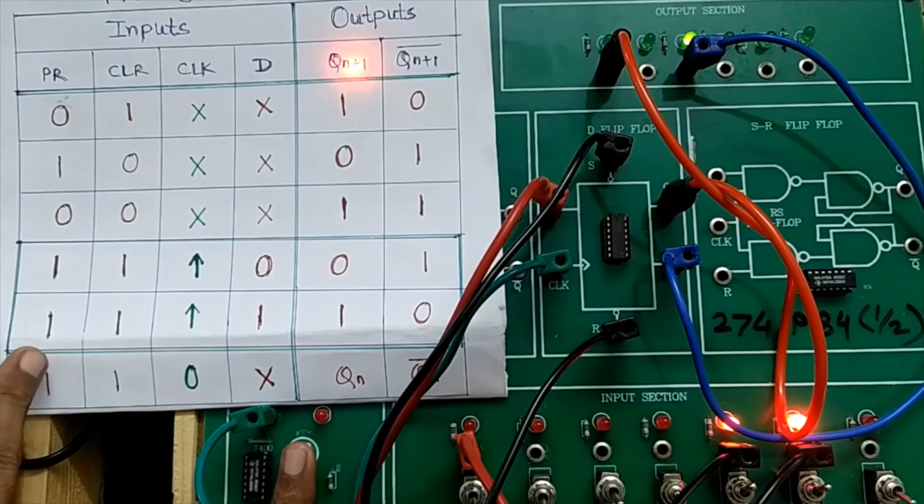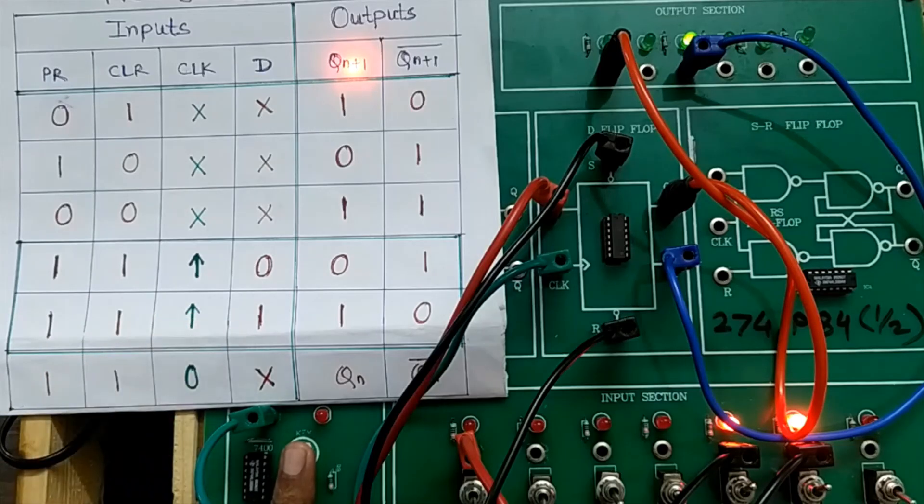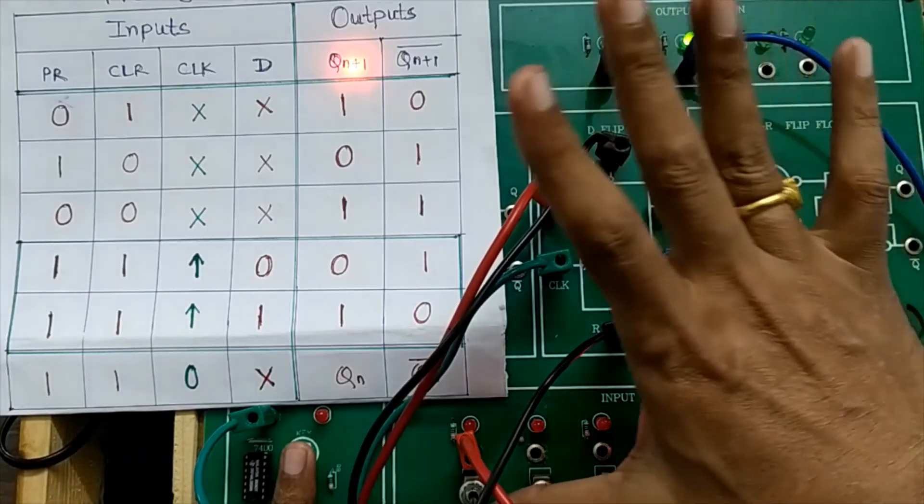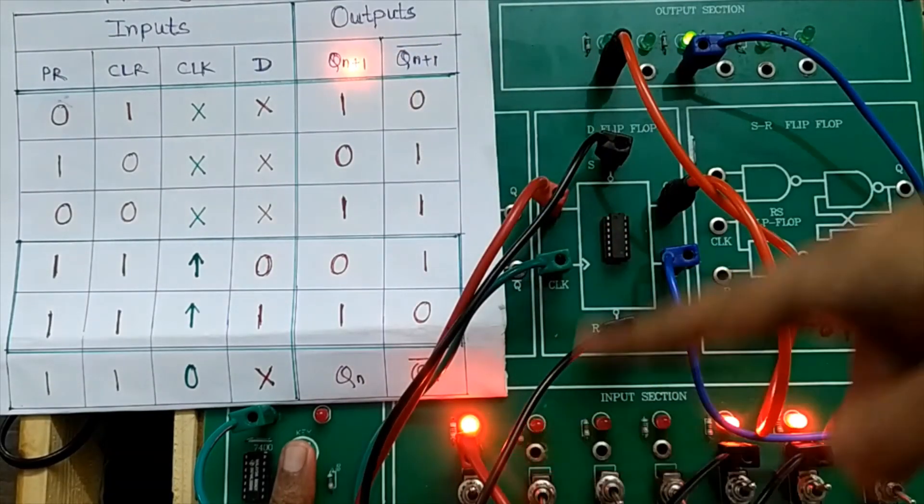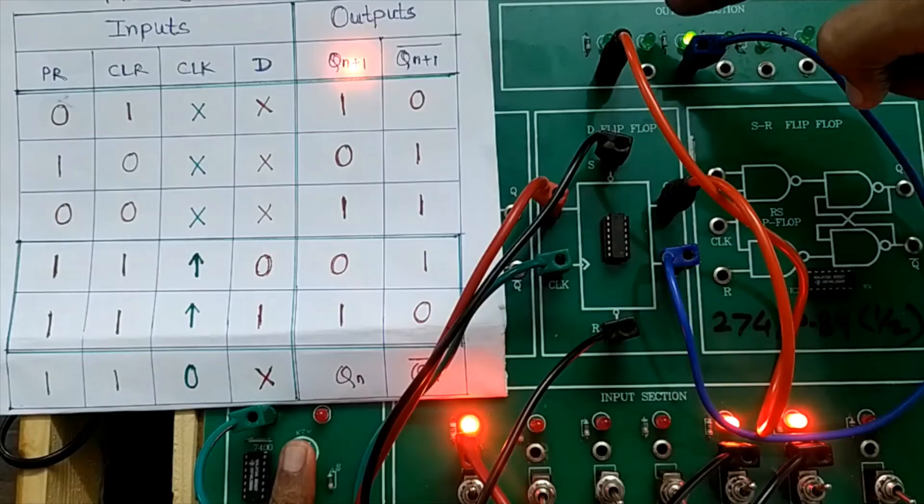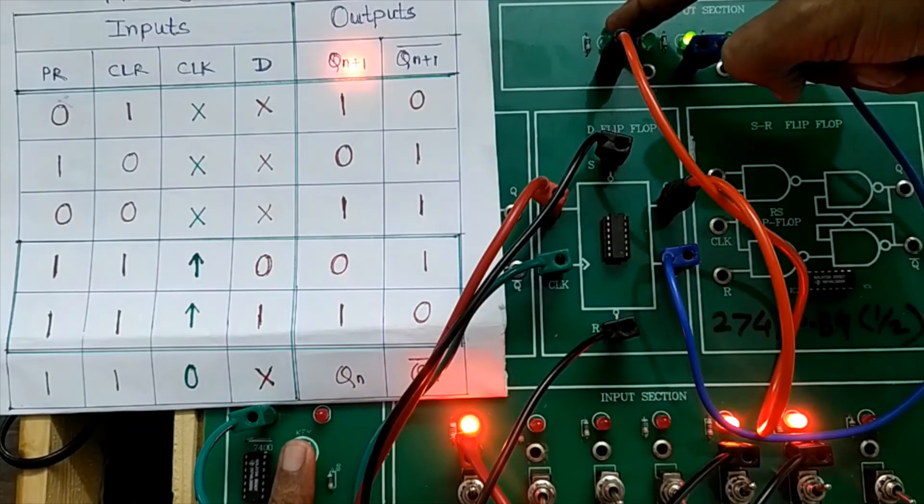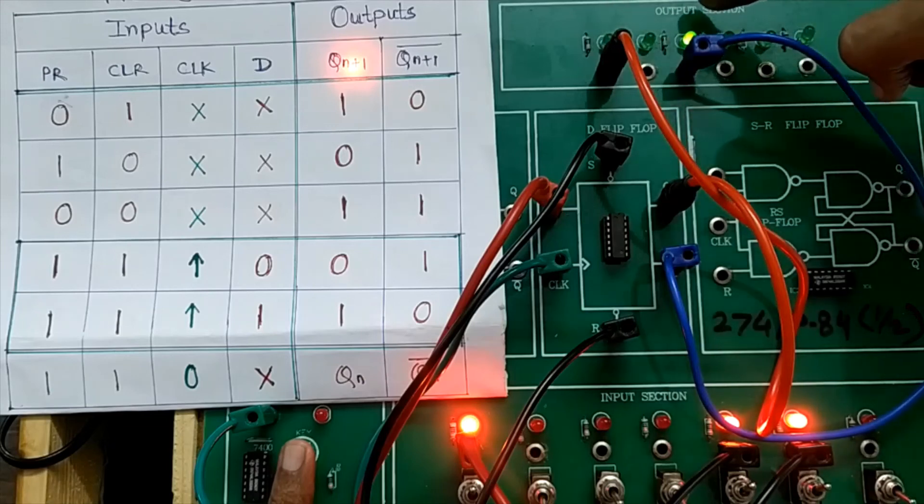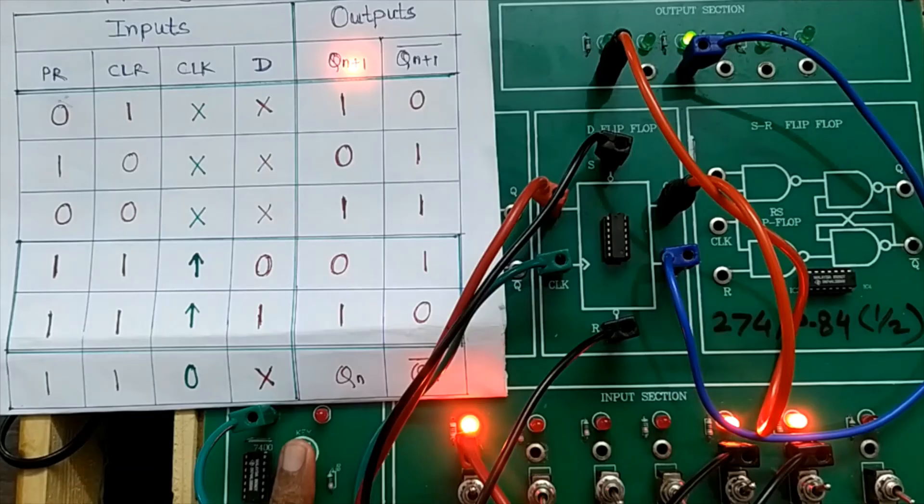Let us verify this condition. Preset is one, clear is one, and here the applied input is one. I will apply D as one. Logic one is applied to D input. Now you can see there is no change in the output. What is expected? Output should become one, non-inverting output should become one and inverting should become zero. But there is no change because I have not given a positive going clock.